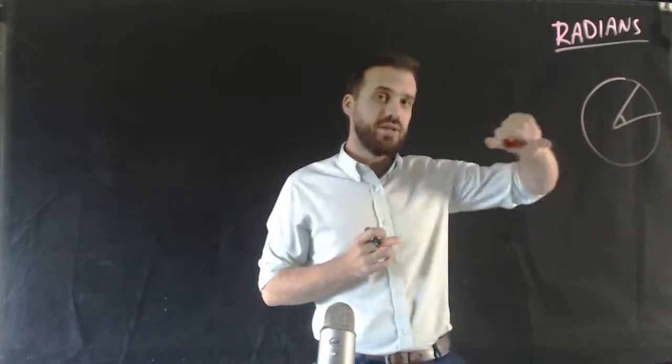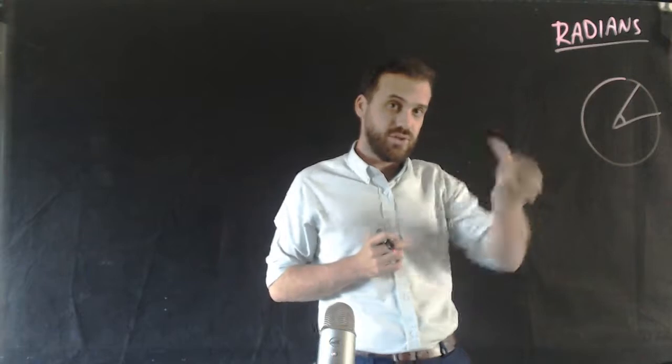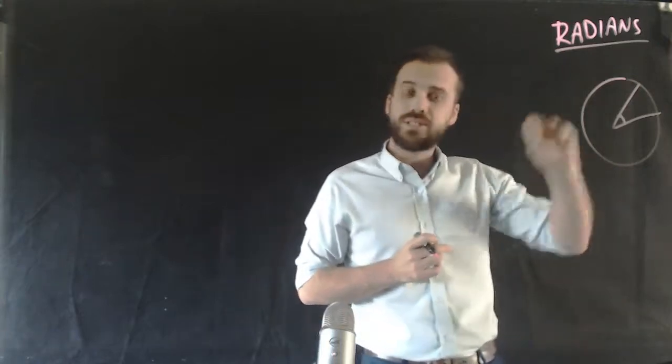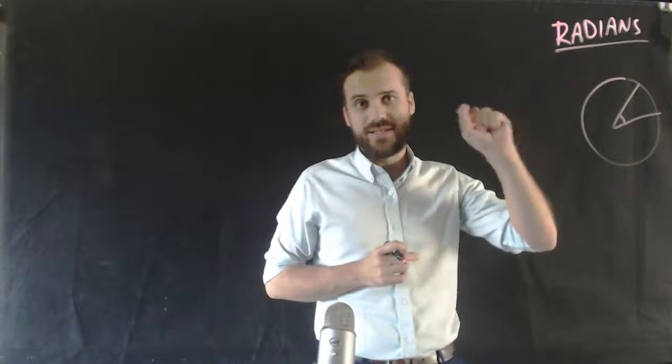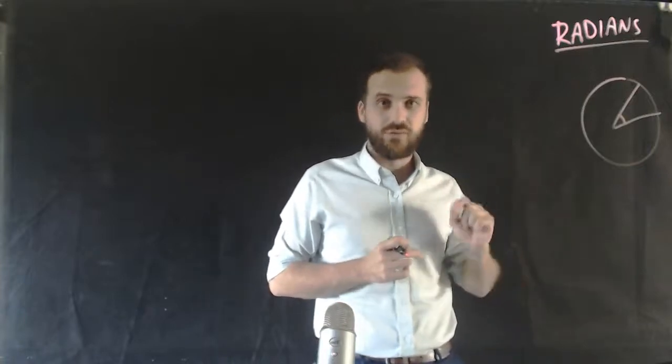If someone does a 180, you know that means that they turn half a turn. You don't always have to use degrees. You can use radians, and a radian is a different measure of angles.